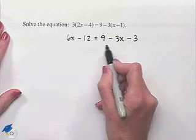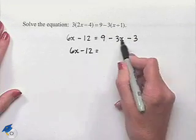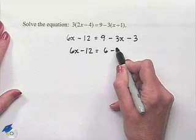Now let's combine like terms on the right. We're going to have 6x minus 12 equals, we're going to have 9 minus 3, which is 6, minus 3x.